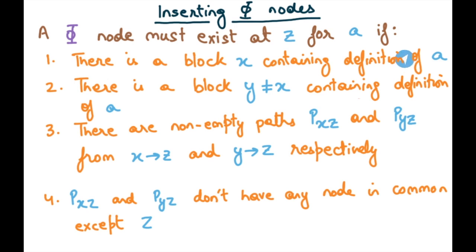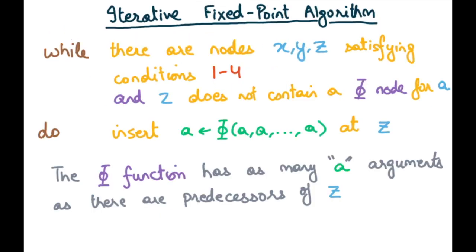You can think of these as a set of constraints a well-formed SSA program must satisfy. If these four constraints are satisfied, the phi nodes have been correctly added. Note that renaming different definitions is also required to complete SSA, but from the perspective of adding phi nodes, these constraints define correctness. From this we can derive an iterative fixed-point algorithm that converts a given program into a well-formed SSA with the right set of phi nodes.